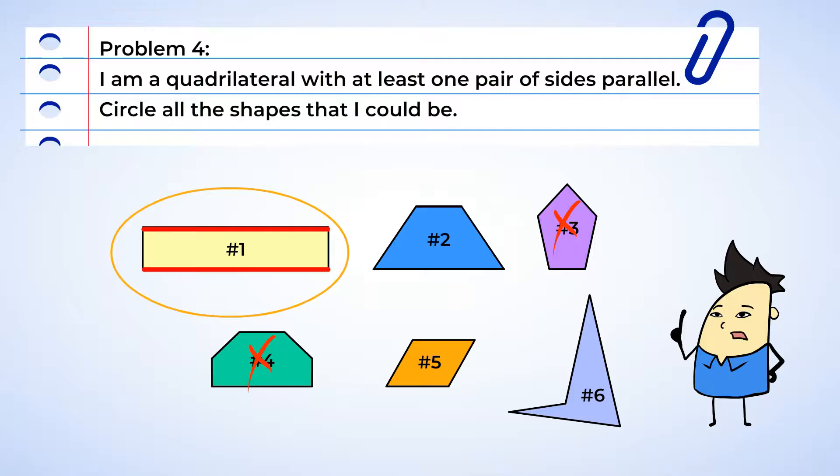Shape 2. The sides on the left and right are slanted and looks like they'll intersect or cross each other if we extend them. Oh, but wait. The top and bottom are straight lines that are the same distance apart. And this means that the top and bottom sides are indeed parallel. So we can circle shape number 2.